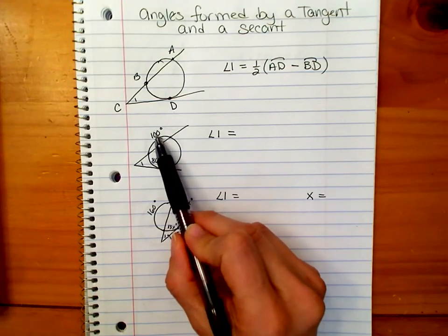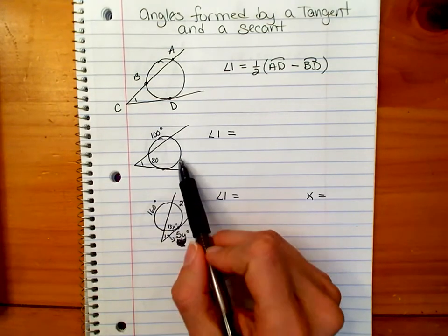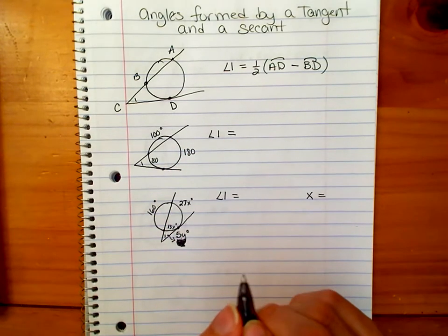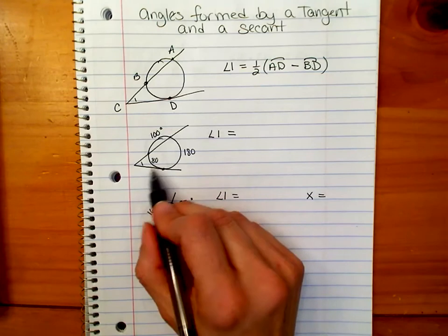Because we know that 100 plus 80 is 180, and it takes 180 more to get all the way around the circle to get to 360. So now I have these two arcs.